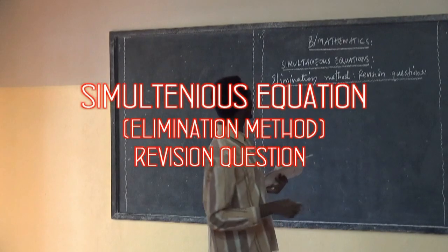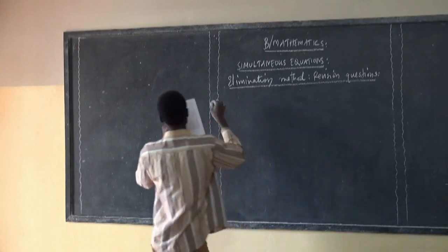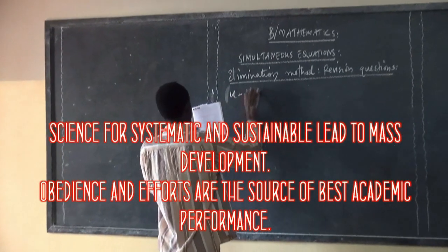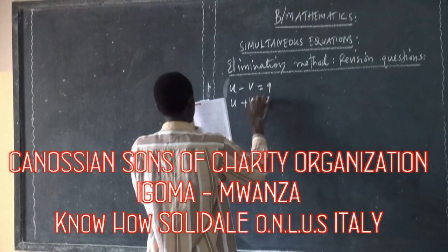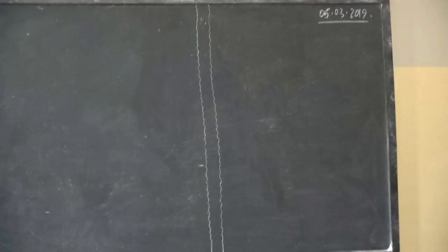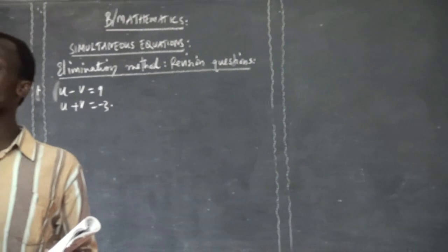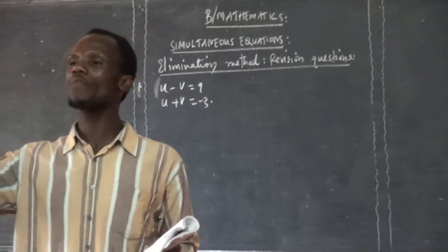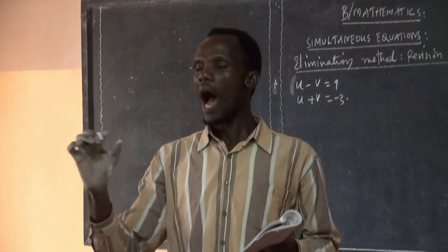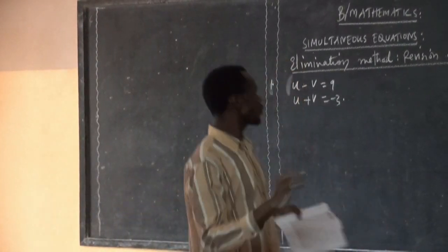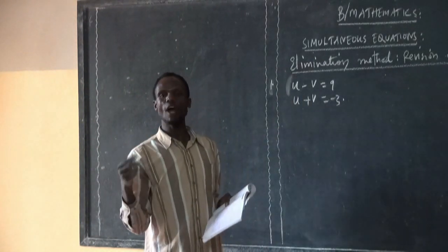Now, Simultaneous Equation Elimination Methods are the official questions. The first question was U minus V is equal to 9. U plus V is equal to negative 3. The Elimination Method says we eliminate one of the letters so as we can obtain a single equation with one unknown value. We eliminate either by adding them or by subtracting them.